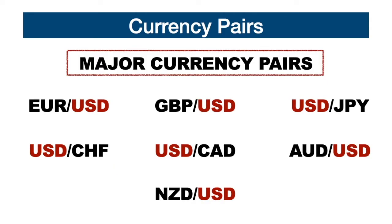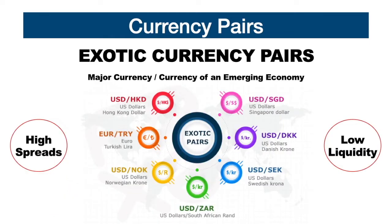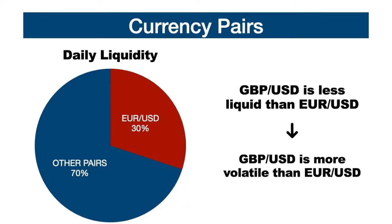Major currency pairs are all the pairs that contain the US dollar, and they are the most traded pairs, making them the most liquid in the market. Currency pairs that do not contain the US dollar are called cross pairs. The most liquid cross pairs are called minor pairs, and are those that contain the euro, the yen, and the pound. Exotic pairs are formed by a major currency united to a currency of an emerging economy, such as Brazil, Mexico, or Singapore, and have the highest spreads due to lower liquidity. The euro-dollar pair is the most liquid in the market, representing 30% of the total daily volume of the forex market.